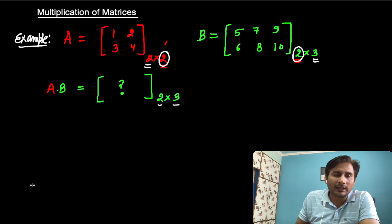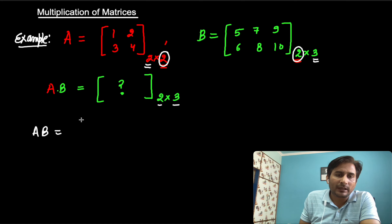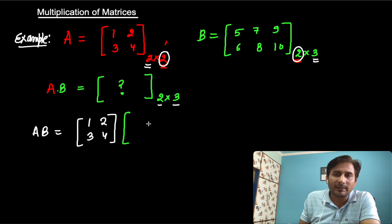Now let us look at how to multiply these two matrices. We need to find A×B. Write matrix A here: 1, 2, 3, 4. And write matrix B here: the B matrix is 5, 6, 7, 8, 9, 10 like this.